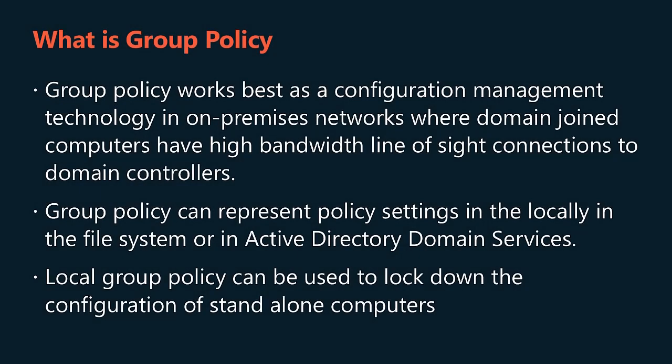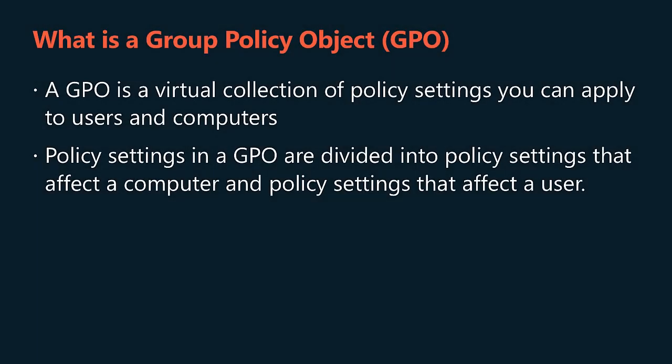Group policy works best as a configuration management technology in on-premises networks where domain-joined computers have high-bandwidth line-of-sight connections to domain controllers. Group policy can represent policy settings locally or in Active Directory Domain Services. Local group policy can be used to lock down the configuration of standalone computers, controlling the configuration of the standard user environment without requiring communication with configuration servers. When used with Active Directory, group policy settings are contained in group policy objects, which most IT professionals just call GPOs. In this talk we're mostly interested in Active Directory, so we'll put aside local group policy to cover at some point in the future.